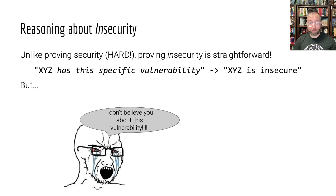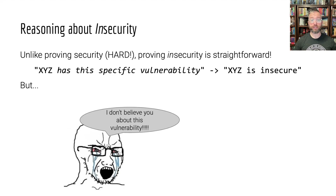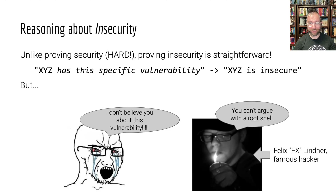The problem is, very depressingly often, you will find a vulnerability, and unless someone is actually waiting and hoping for you to find that vulnerability — as in the case of NIST during that competition, because they really wanted to eliminate as many vulnerable algorithms as they could — typically you'll go to someone and say 'I have a vulnerability,' and they'll say 'I don't know, I don't believe you.' This happens to us and our research lab here at ASU all the time.